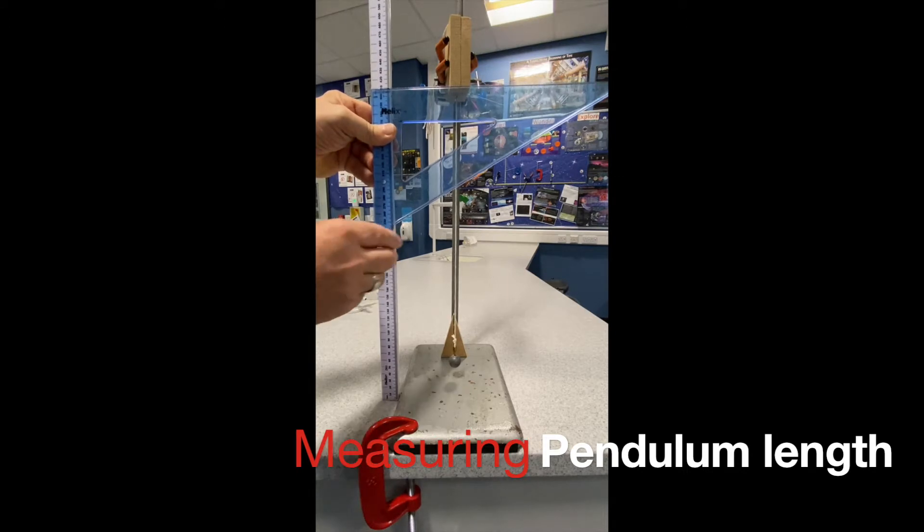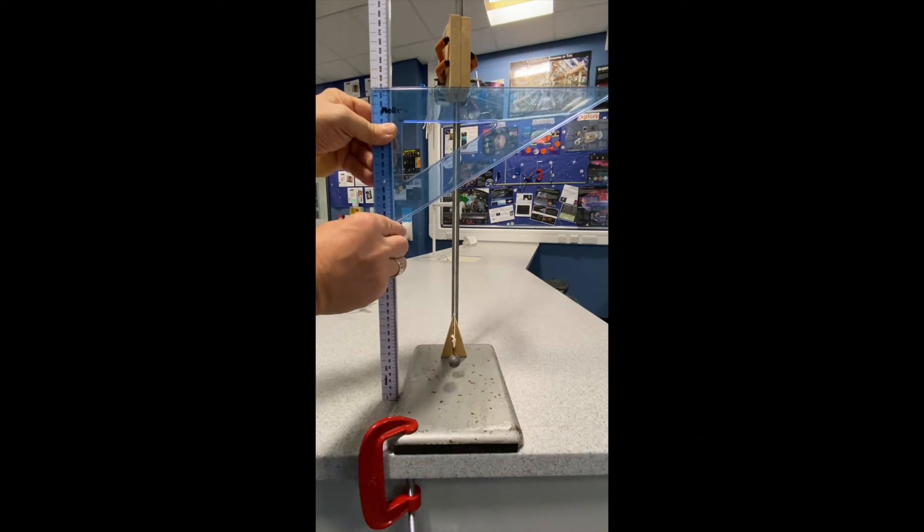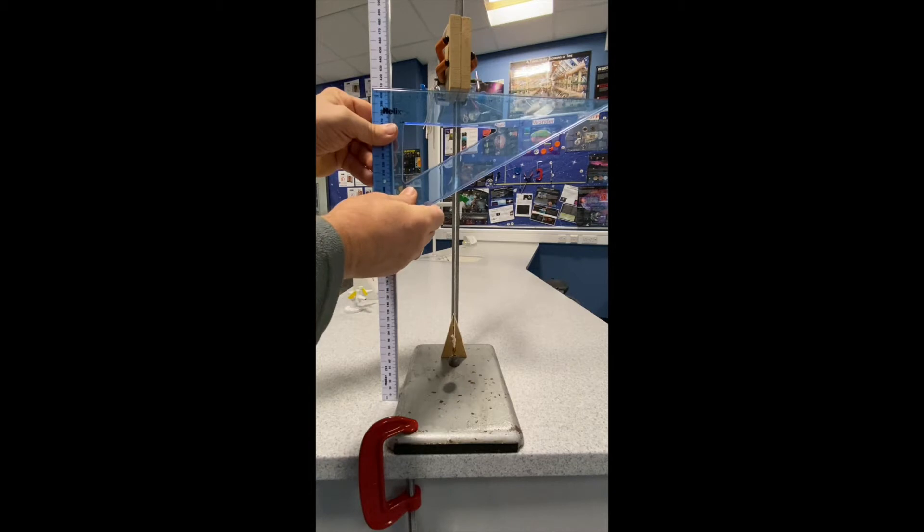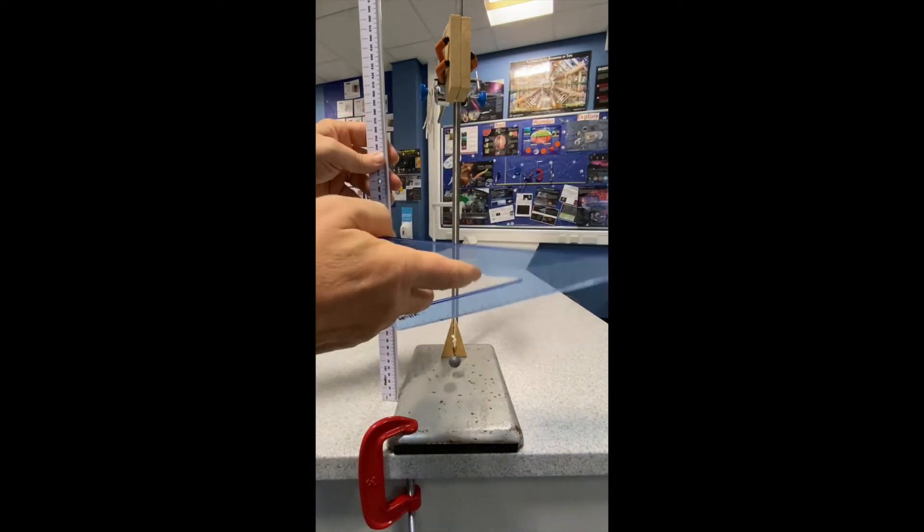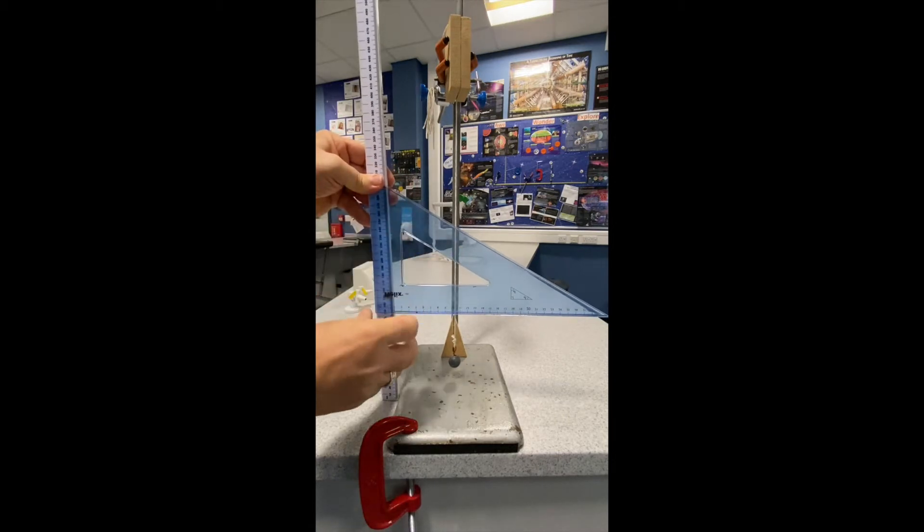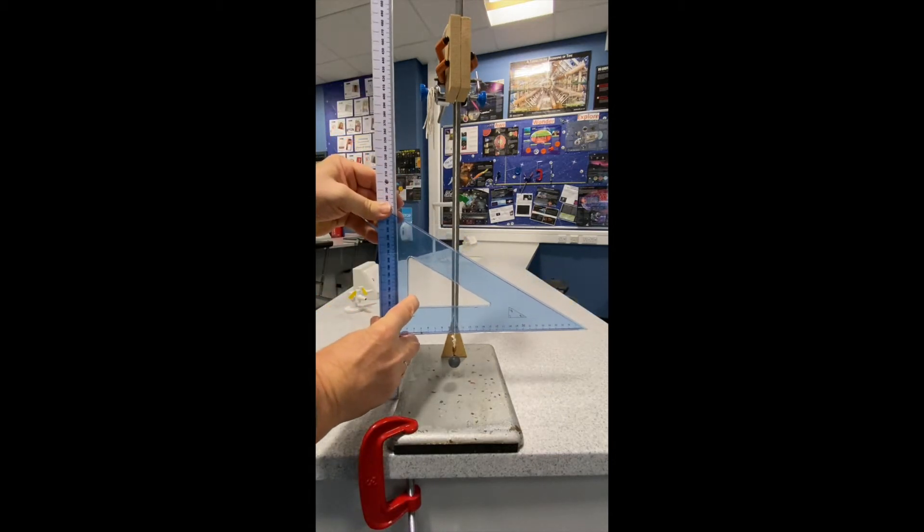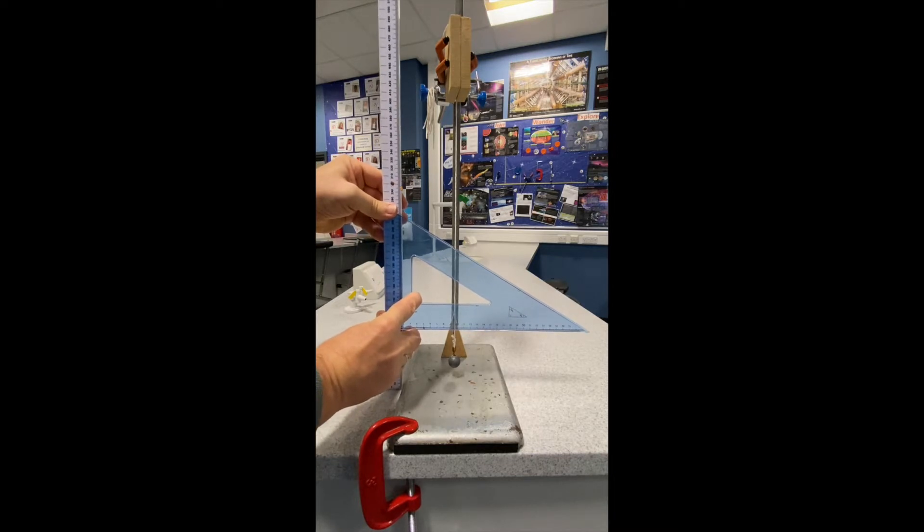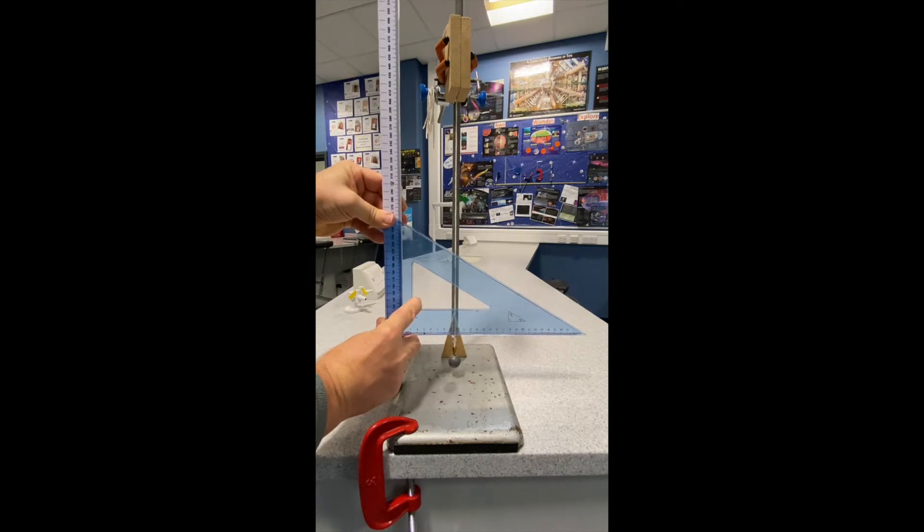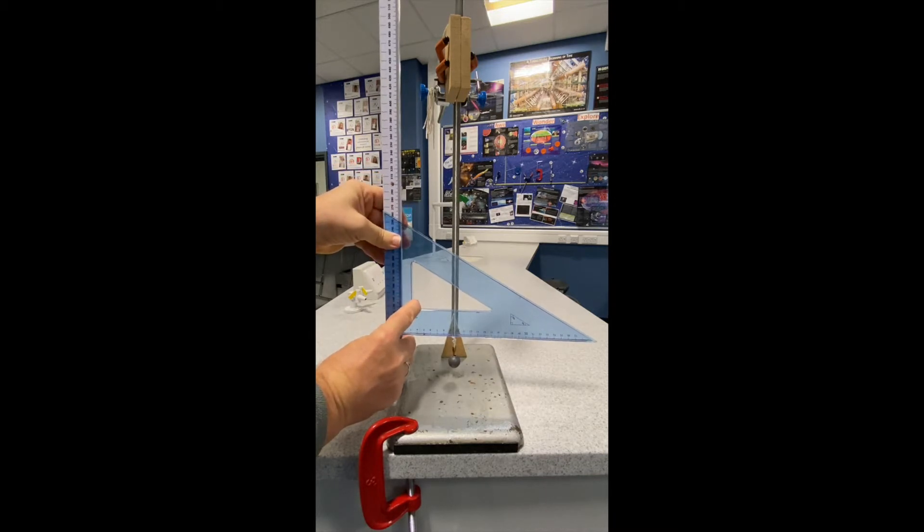Measuring the length of the pendulum is carried out using the meter ruler and a set square. The set square is placed against the base of the boards clamping the pendulum. The completion of the length measurement is to the top of the knot in the string. In theory, the pendulum length should be measured to the center of mass of the bob; therefore, there is a systematic error in the length readings in this experiment.